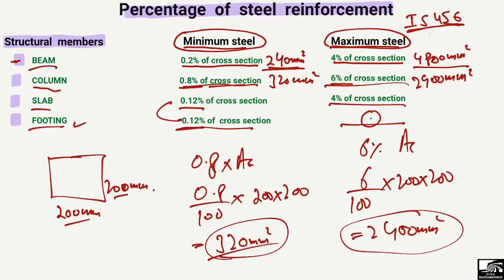These are the different requirements for minimum and maximum steel reinforcement for the design of different structural members according to IS 456. Hope you guys understand — don't forget to subscribe to the channel for more civil engineering videos.